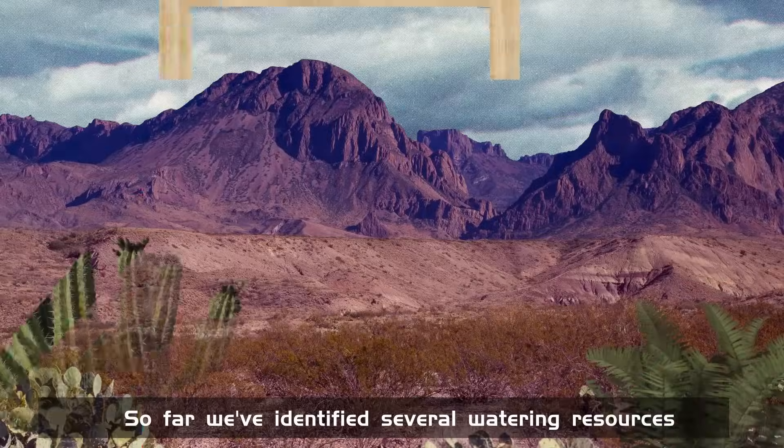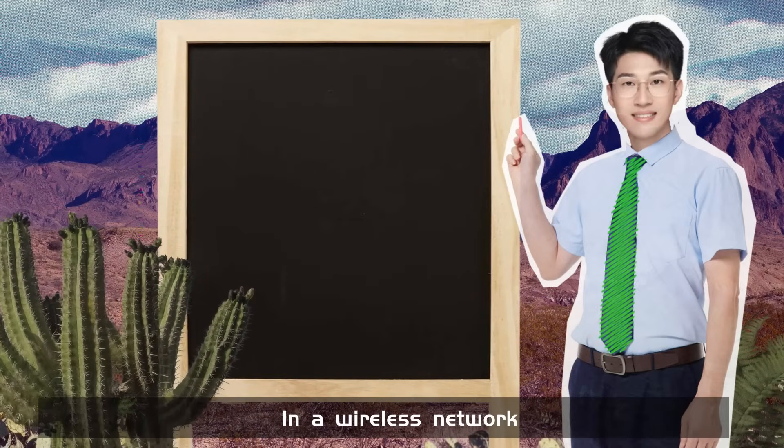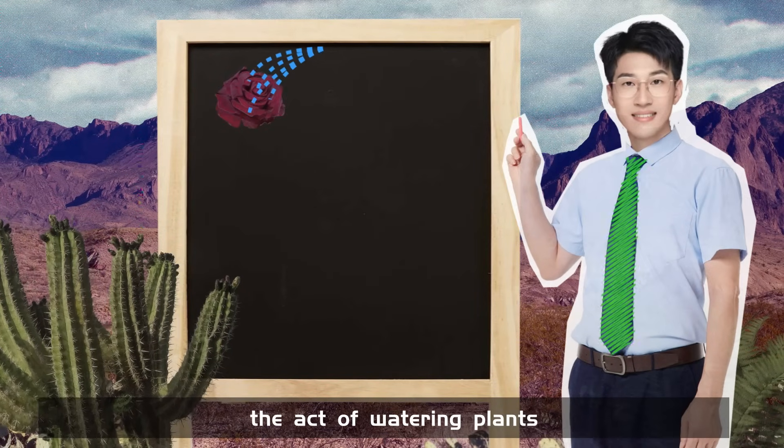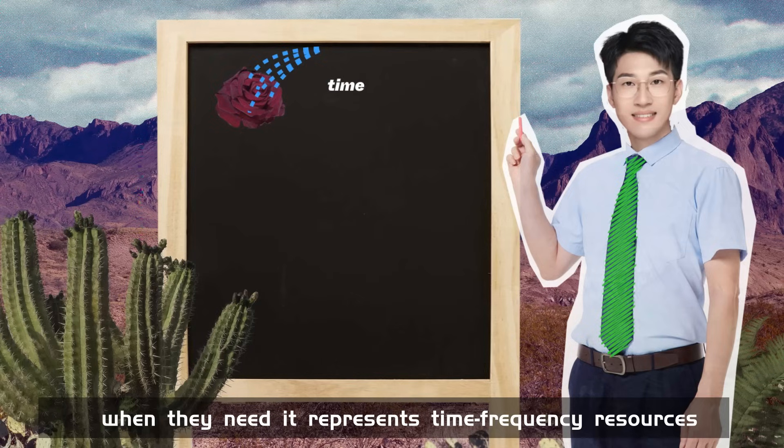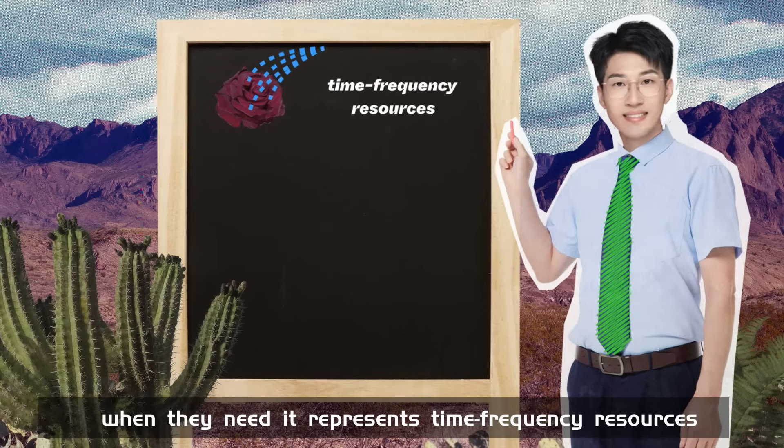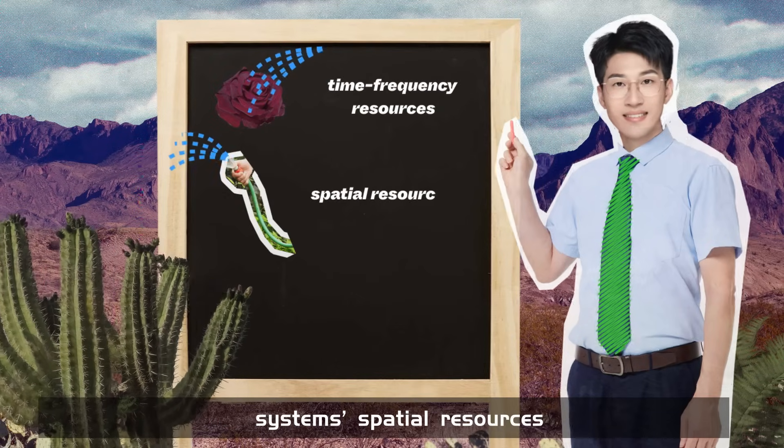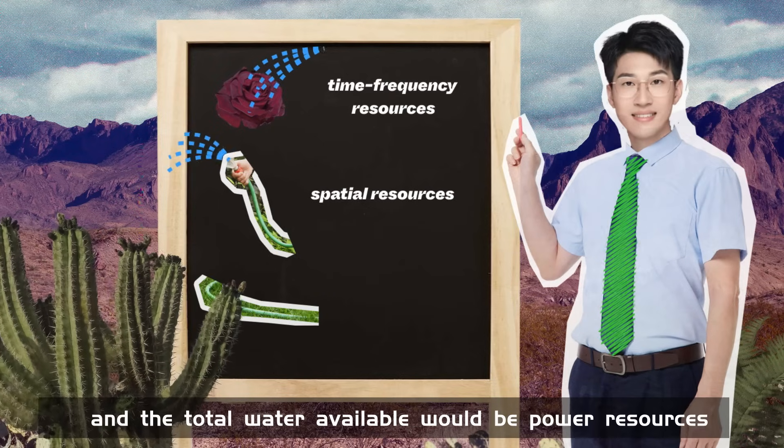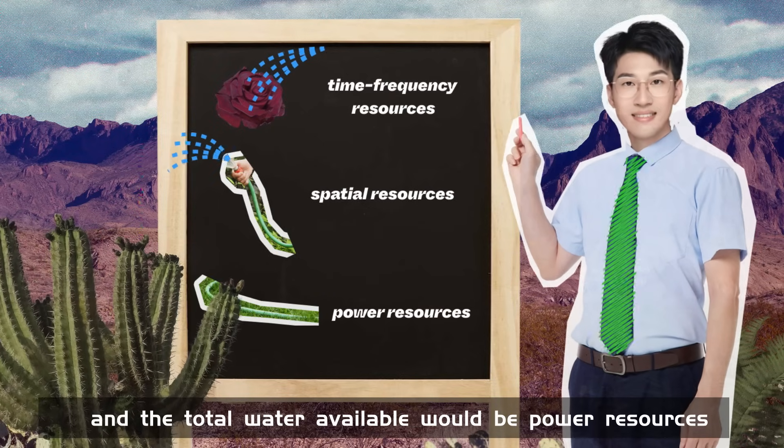So far, we've identified several watering resources in a wireless network. The act of watering plants when they need it represents time frequency resources. The application of multiple sprayer systems spatial resources. And the total water available would be power resources.